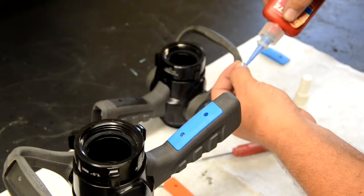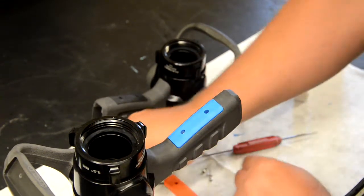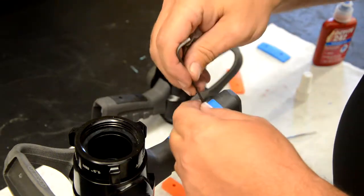Next, apply a small dab of blue Loctite number 242 or equivalent to the set screws and tighten until snug.